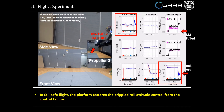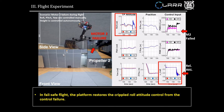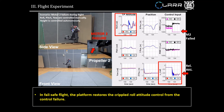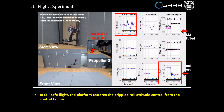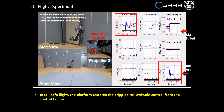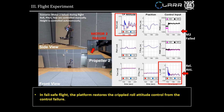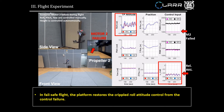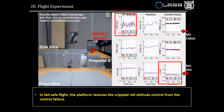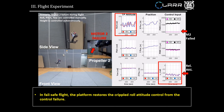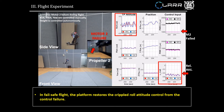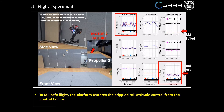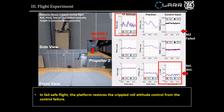However, once one of the thrusters fails, the inherent faulty motor detector immediately identifies the faulty motor 2 and enables the emergency failsafe flight controller dedicated for the motor 2 failure scenario. With the failsafe flight controller, the platform restores the crippled roll attitude control from the control failure.